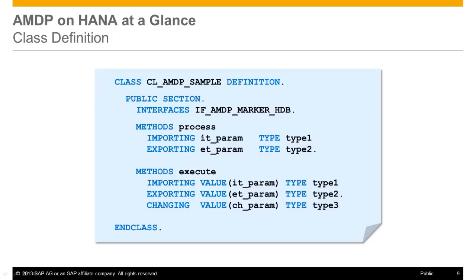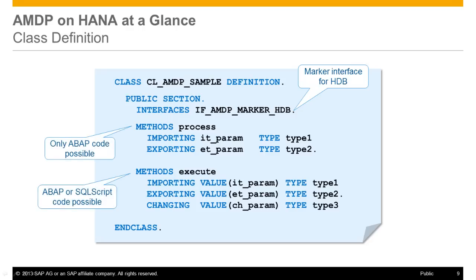An example of an AMDP class definition is displayed on the screen. It is a public class, and the marker interface for the SAP HANA database platform has to be specified. Whether a method of an AMDP class can be implemented as an AMDP method or not depends on the definition of its parameter interface. The parameters have mainly the following prerequisites: exporting, importing, and changing parameters are allowed.